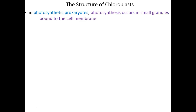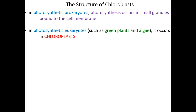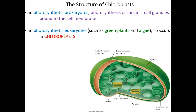Since all of this happens in chloroplasts, let's understand what a chloroplast actually looks like. In photosynthetic prokaryotes, photosynthesis occurs in small granules bound to the cell membrane — no organelles in prokaryotes. But in photosynthetic eukaryotes such as green plants and algae, all photosynthesis occurs in the chloroplasts. Chloroplasts are believed to derive from the same origin as mitochondria — they have their own genome and their own DNA, believed to be remnants of an engulfed photosynthetic prokaryote eaten long ago by a proto-eukaryotic cell.